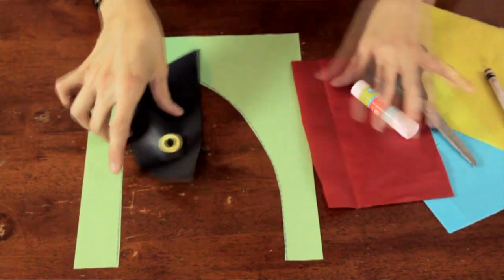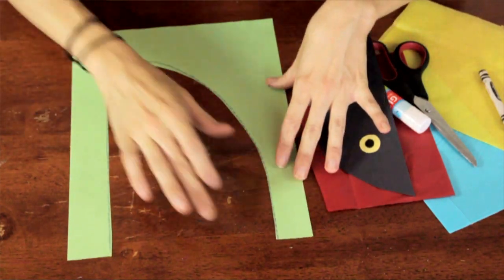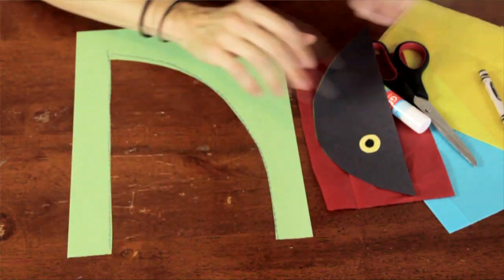As you can see, I've already cut out the basic shape of our toucan's beak. It's sort of a piece of an arch with a straight line underneath.